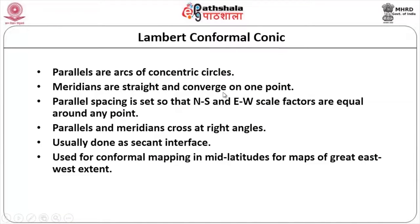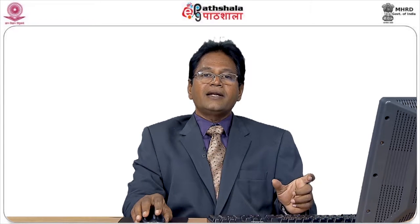Parallels and meridians cross at right angles to one another, and it is usually done as a second surface interface. This is used for conformal mapping in mid-latitudes of maps of great east-west extent. It all depends on the value of the standard parallel selected while preparing the map. When you have a great east-west extent, you go for a conical map. You can use the Lambert conformal conical projection for mapping land extending from east to west.